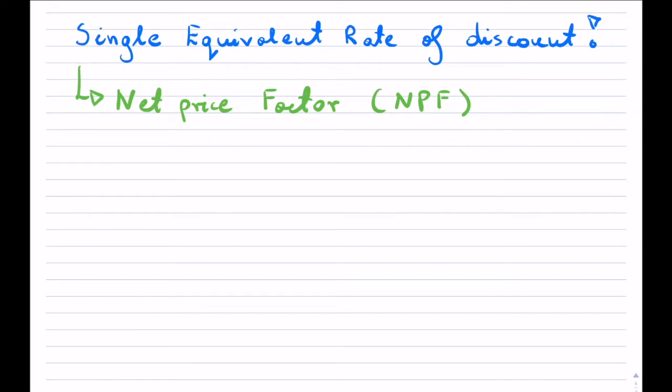Now, in the trade discount video, what I talked about was a net price factor, which basically is how much you pay for each dollar of purchasing some product after the discounts that you get.